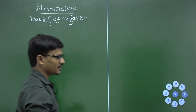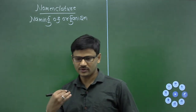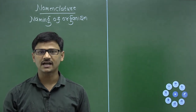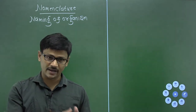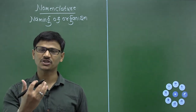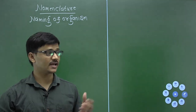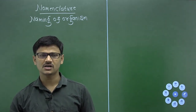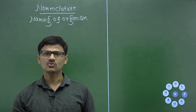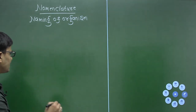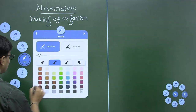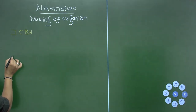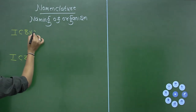The name given to a living organism should be standard and scientific — so that the animal or plant is known by that name all over the world and confusion can be avoided. There are some governing codes like ICBN and ICZN.